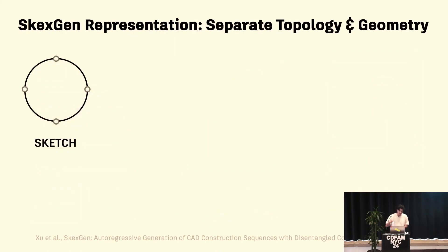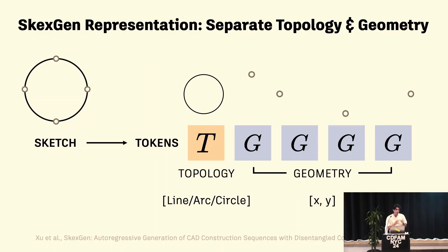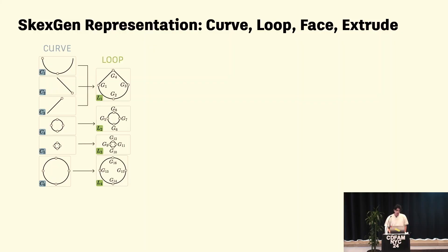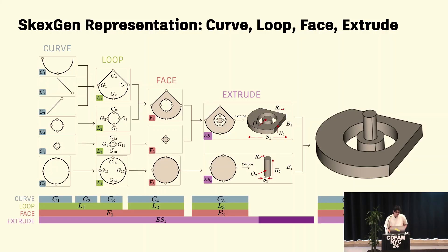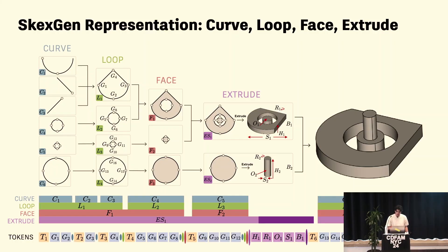One paper I'll walk you through is called SketchGen. First, here's the representation it uses. Imagine you have a simple circle and want to feed it to a neural network. The way we do it is to separate out the topology from the geometry: the topology token T indicates the curve type — whether it's a line, arc, or circle — and then we have samples of XY points on that curve fed into the neural network. We do this again and again for curves, loops, faces, and extrusions, and all of these things turn into a series of tokens that can be fed to transformer networks.